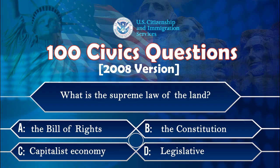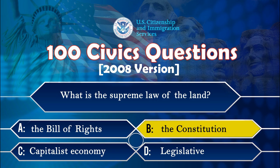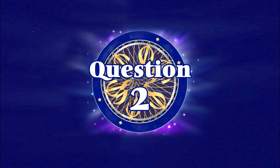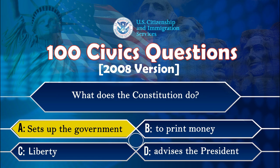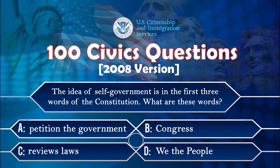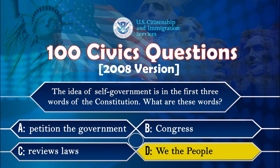What is the supreme law of the land? The Constitution. What does the Constitution do? Sets up the government. The idea of self-government is in the first three words of the Constitution. What are these words? We the people.